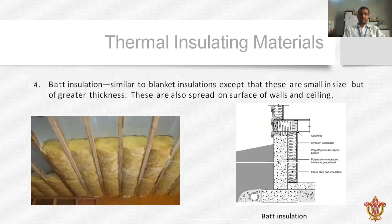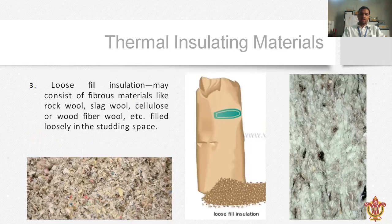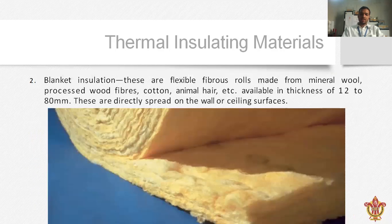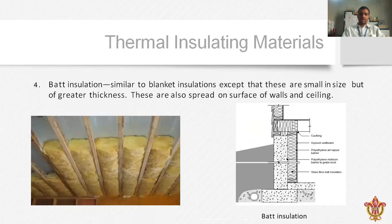The next type is wet insulation — you can see it on the image. It is similar to blanket insulation. There are some differences in certain parts, particularly in the thickness of the bottom layers.